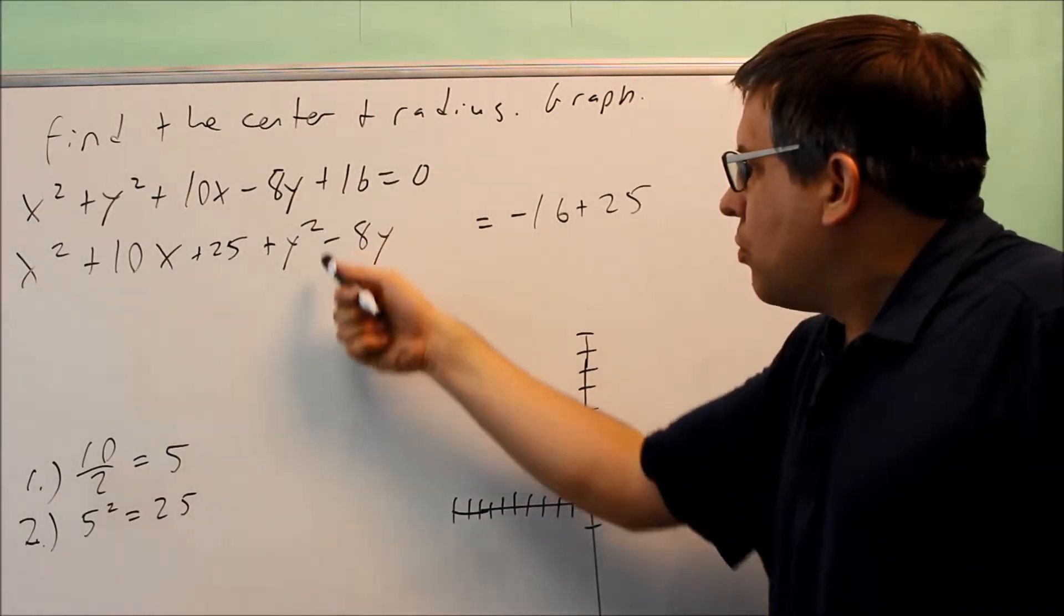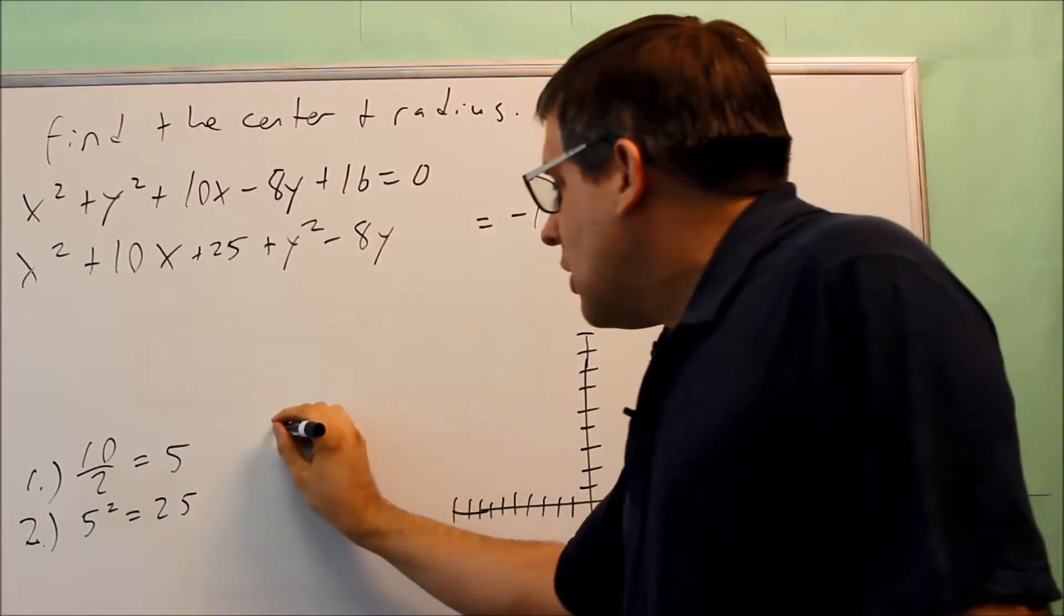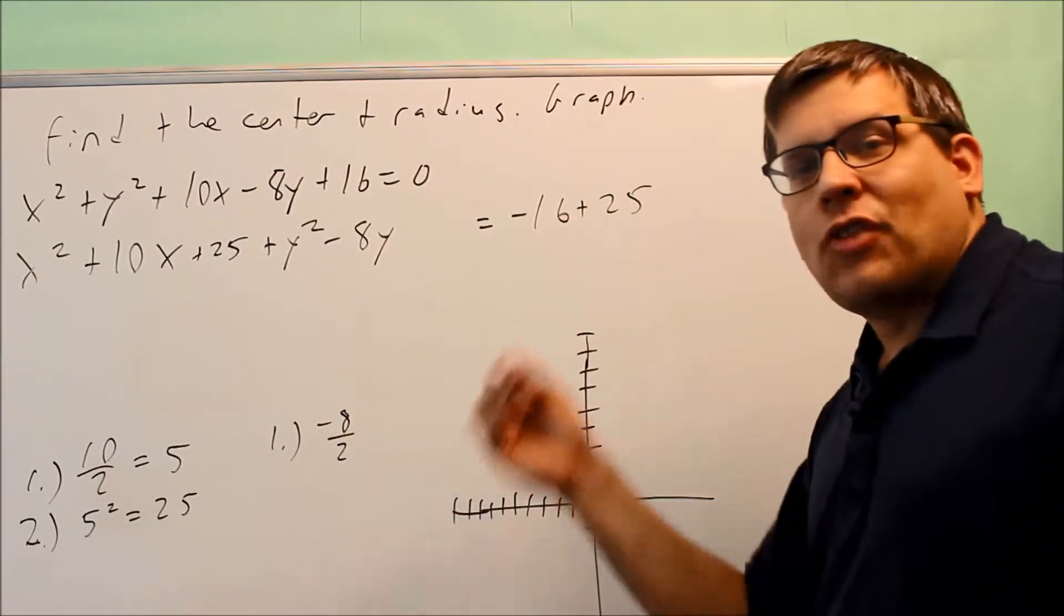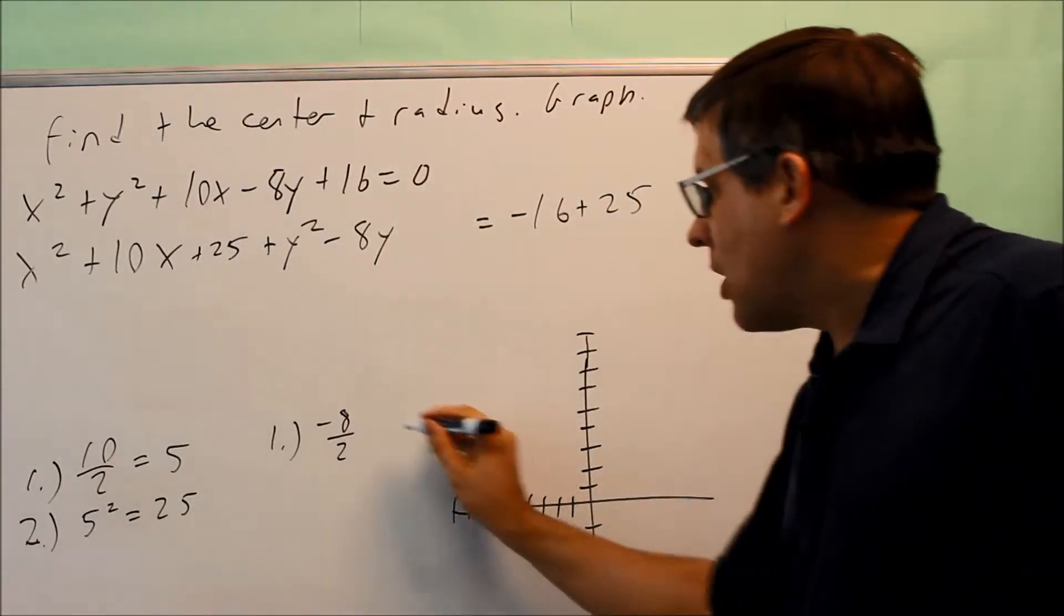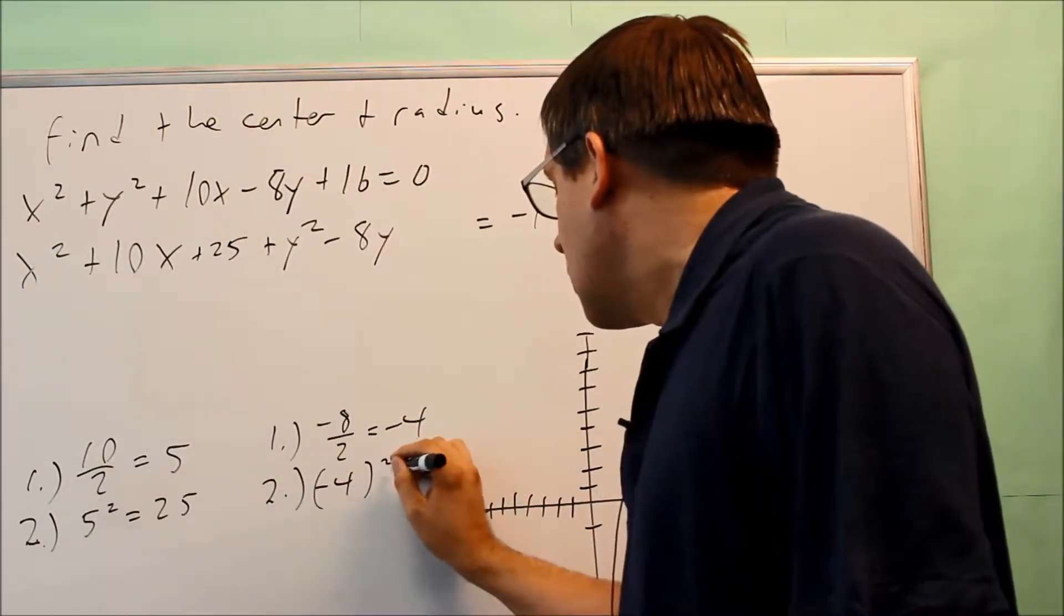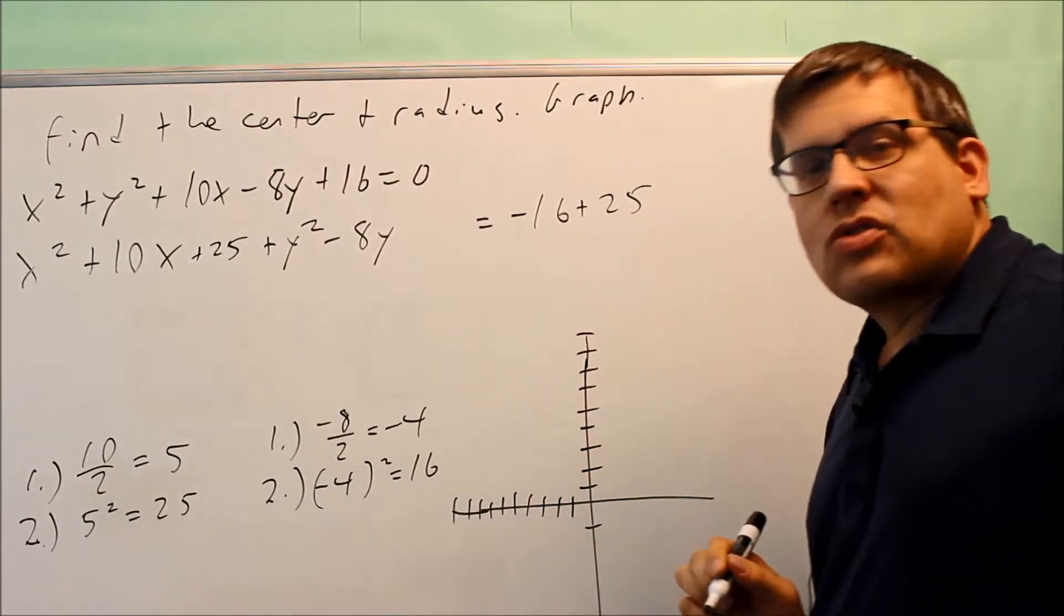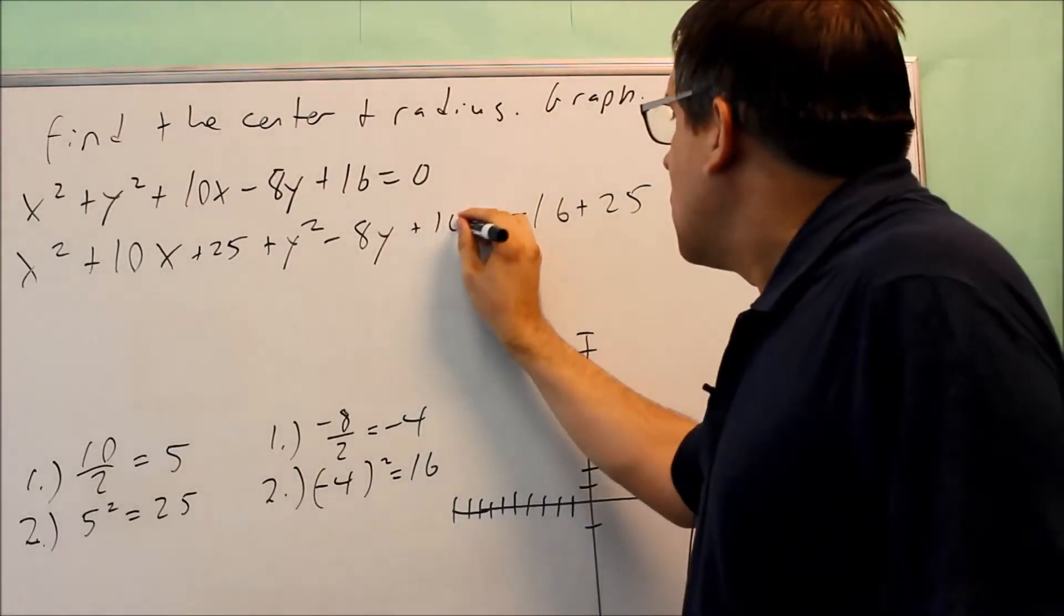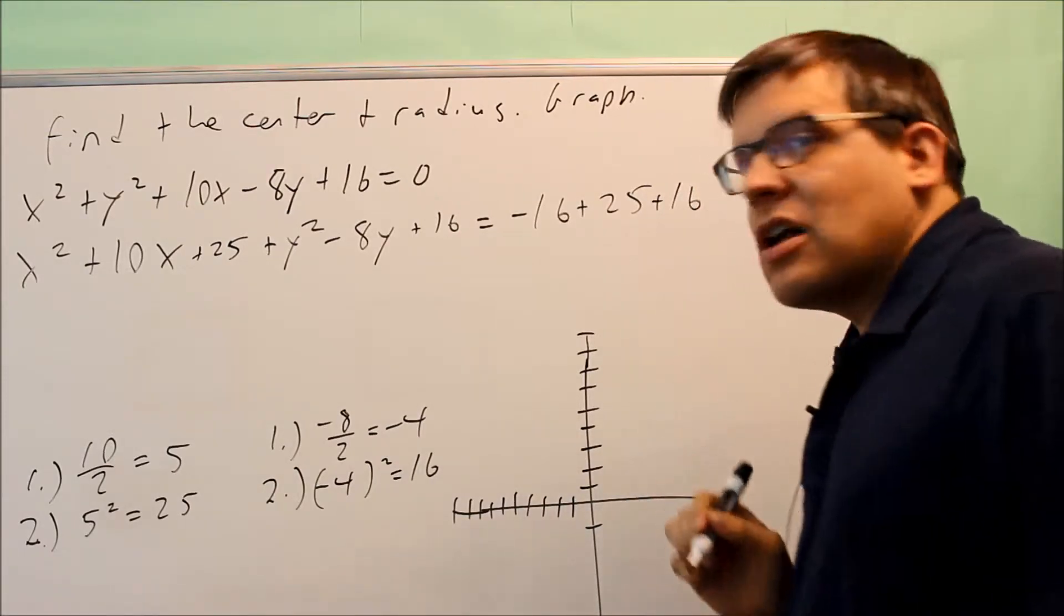Next, we're going to do the complete the square steps with negative 8. So I'm going to take negative 8. Again, the steps are divide by 2 and square it. Divide by 2 and you get negative 4. And then you're going to square the negative 4 and you get 16. The answer you get in step number 2, you're going to add that to both sides of the equation.